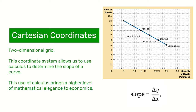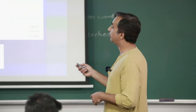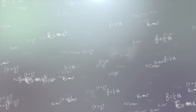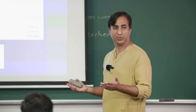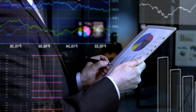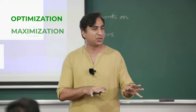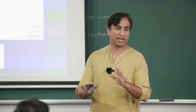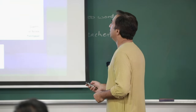Economics uses Cartesian coordinates - a two-dimensional grid with an x-axis and y-axis. You put the independent variable on one axis and the dependent variable on the other and calculate the slope using a simple formula. For curved lines, you use calculus with dy over dx. This methodology has become the basis of nearly all economic questions - optimization, maximization of utility or resources - which is why you must understand calculus to understand economics.